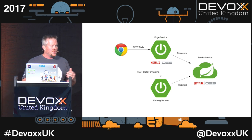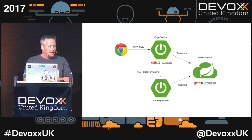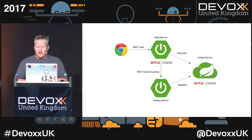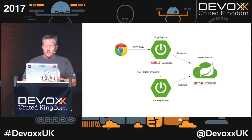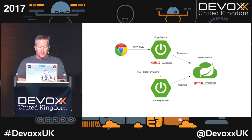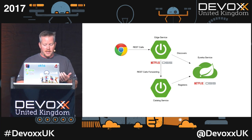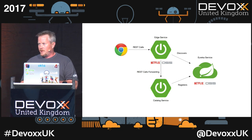For the microservices architecture with Spring Boot, you'll use Spring Cloud, which wraps a lot of open source libraries that do monitoring, service discovery, circuit breakers, intelligent routing, and client-side load balancing. Spring Cloud Netflix is the OSS integration for Spring Boot apps, and it has auto-configuration. Service discovery is provided by Eureka, the circuit breaker is Hystrix, intelligent routing is from Zuul, and client-side load balancing is from Ribbon.